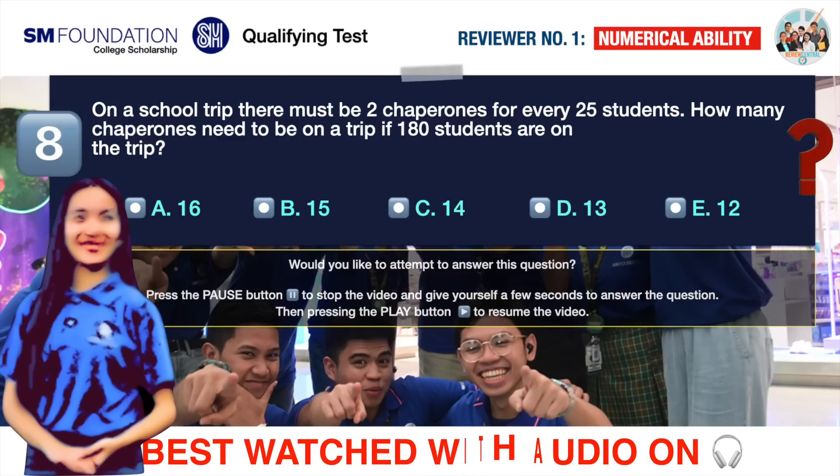Question number 8. On a school trip, there must be 2 chaperones for every 25 students. How many chaperones need to be on a trip if 180 students are on the trip? A 16, B 15, C 14, D 13, E 12.